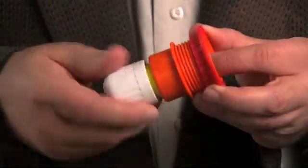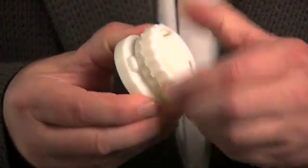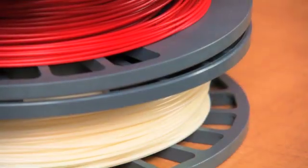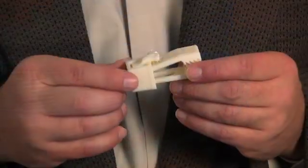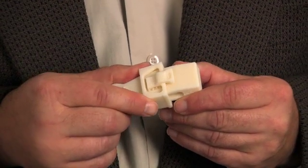You can print models for proof of concept, product mock-ups, marketing tools, and more. Since U-Print SE prints in real ABS thermoplastic, your models will also be durable enough for functional testing.